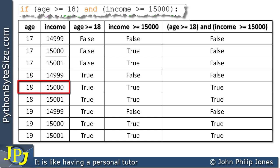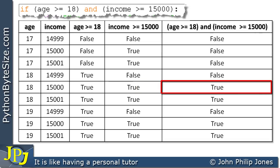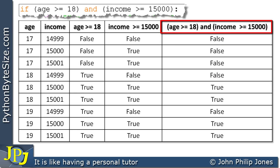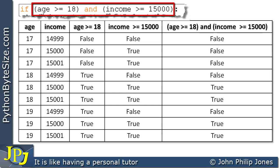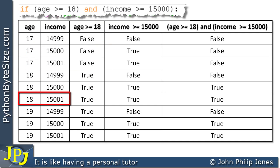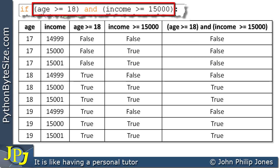When we consider inputs of 18 and £15,000, the customer is old enough and has sufficient income. We get true for the age test and true for the income test. True AND true gives true, so we execute the true branch of the selection construct. Similarly, entering 18 and £15,001 gives true and true, which gives true, and we execute the true route of the selection construct.